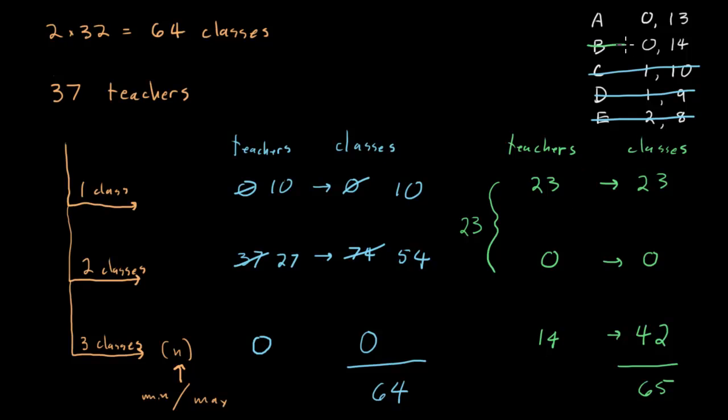That means B is not our answer, and that means 13 must be the maximum possible number of teachers for three classes, and we don't need to test it because we've eliminated everything else, and we click A and get our points.